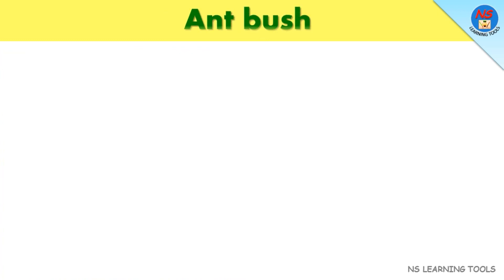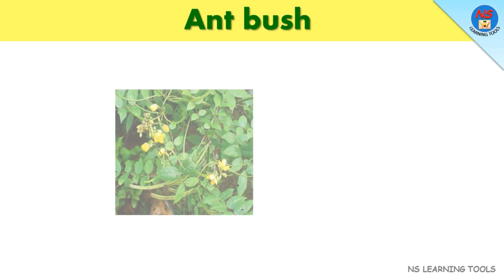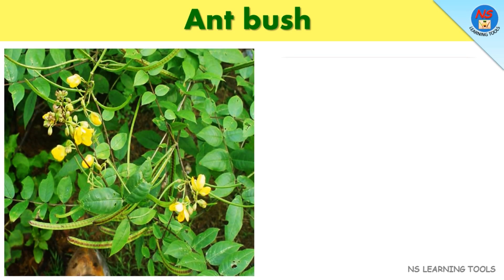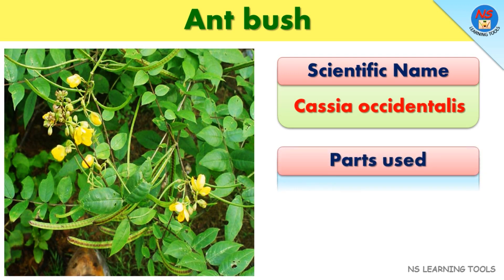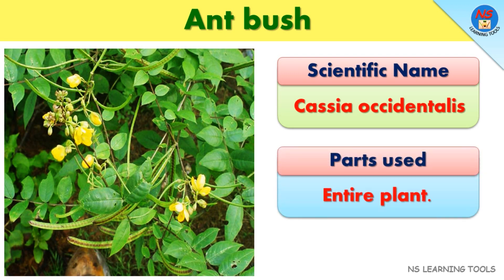Ant bush. Scientific name: Cassia occidentalis. Parts used: Entire plant.